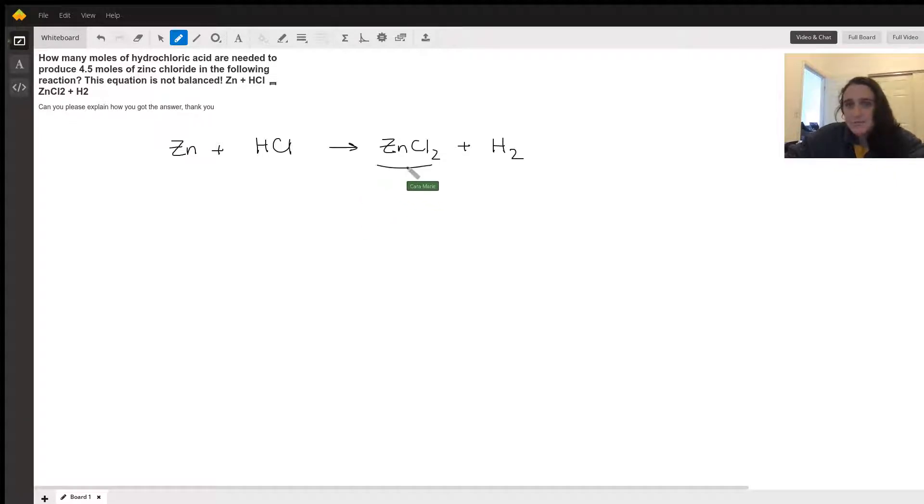the equation, so that would be my zinc chloride. I'm going to notice that I need two chlorides because I have a two right there, so I'm going to put a two here. Now my equation is balanced because